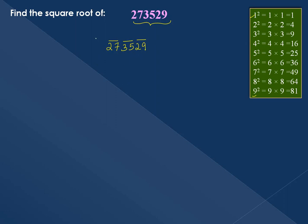Now we will use the long division method with these pairs. Looking at the first pair, 27, we find which square number fits. 4 multiplied by 4 is 16, and 5 multiplied by 5 is 25. Since 25 is less than 27, we will use 5.